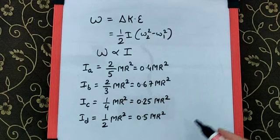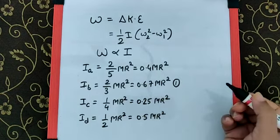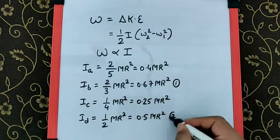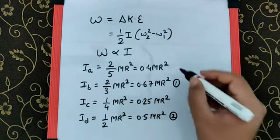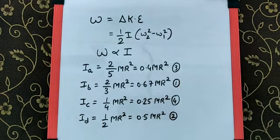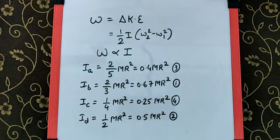The maximum moment of inertia is for the hollow sphere, second is for the circular hoop, third is for the solid sphere, and fourth is for the circular disk.